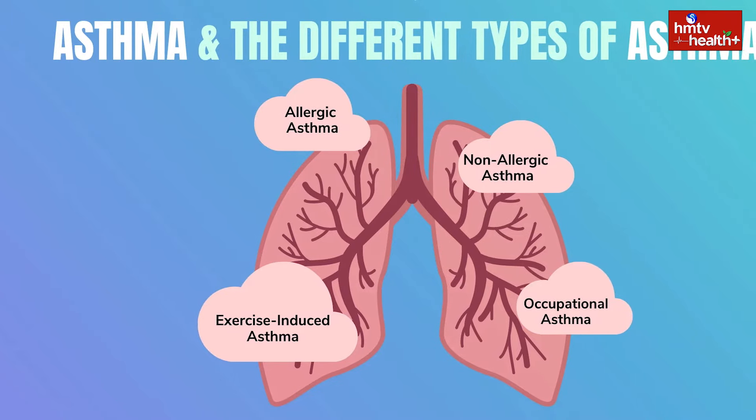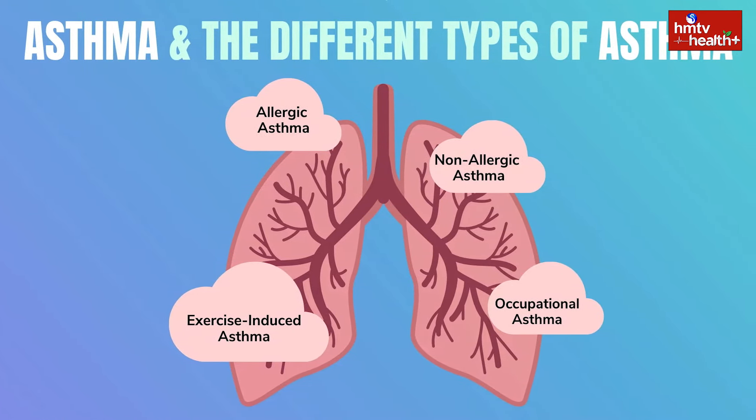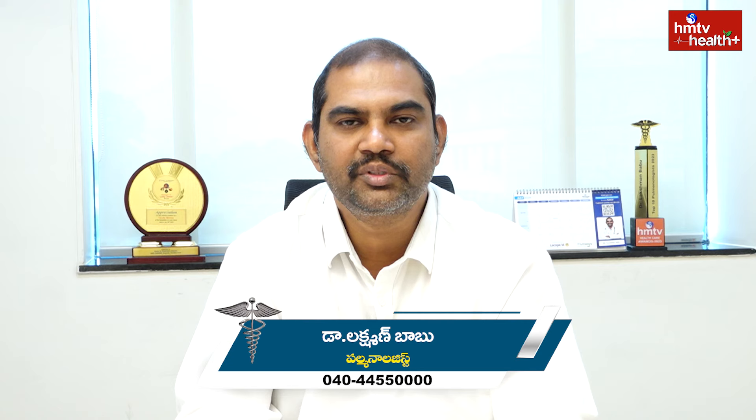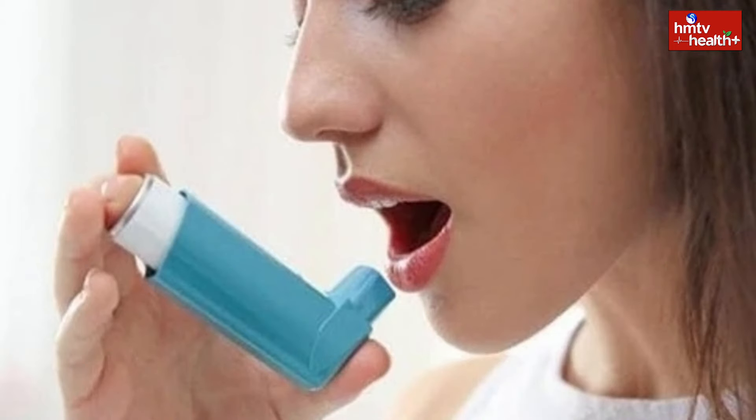The second type is non-allergic asthma. It can be occupational, caused by chemical compound exposure, hormonal imbalance, or obesity, which is also an important factor. So allergic and non-allergic are the two most important types of asthma.